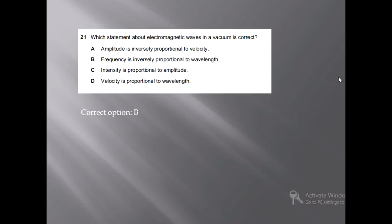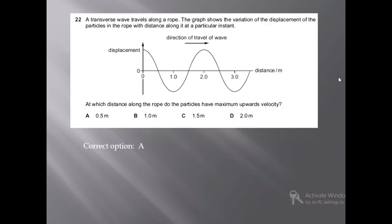Moving on to the next question. MCQ number 22: a transverse wave travels along a rope. The graph shows the variation of the displacement of the particles in the rope with distance along it at a particular instant. We have been given the displacement-distance graph.